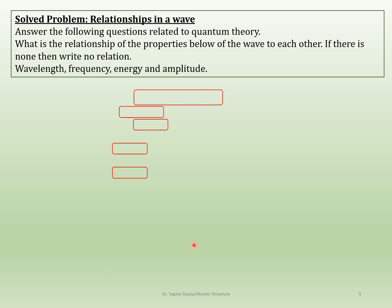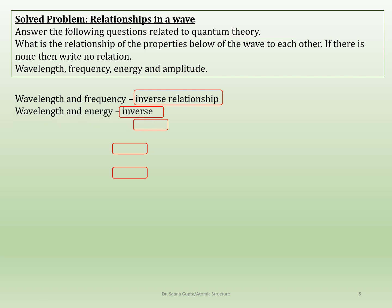Here are a few questions regarding the relationships in a wave. What is the relationship between frequency and wavelength? It's an inverse relationship. What is the relationship between wavelength and energy? That is also inverse, because frequency is directly proportional to energy, not wavelength. What about wavelength and amplitude? There is no relationship between them, because amplitude — the height of the crest — could be anything. Frequency and energy is a direct relationship.